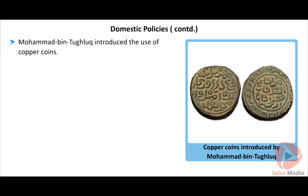Mohammed bin Tughlaq introduced the use of copper coins. These coins were not minted at a government mint. As they were not minted officially, people started making their own coins. Soon, there was abundance of copper coins and it lost its value. So Tughlaq stopped the usage of copper currency coins. A mint is an industrial facility which manufactures coins for currency.